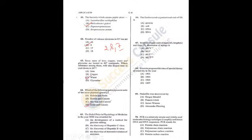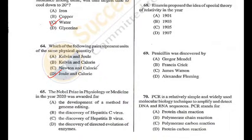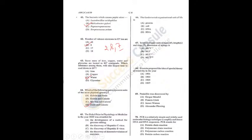Question 65: Nobel Prize in Physiology or Medicine in 2020 was awarded to Harvey J. Alter, Michael Houghton, and Charles M. Rice for the identification of Hepatitis C virus. The virus is C but the answer option is B. Don't get confused — for Q65 the answer is B.